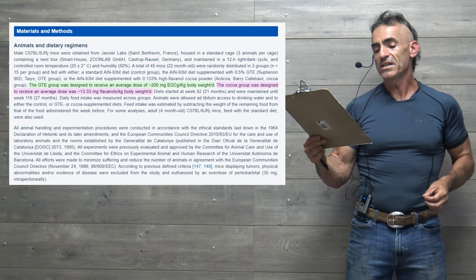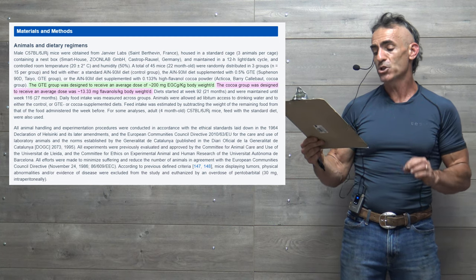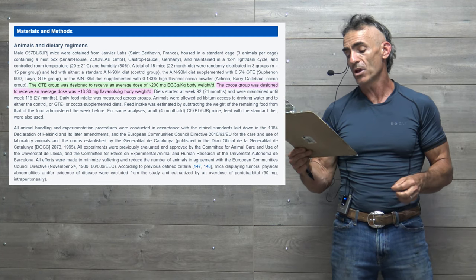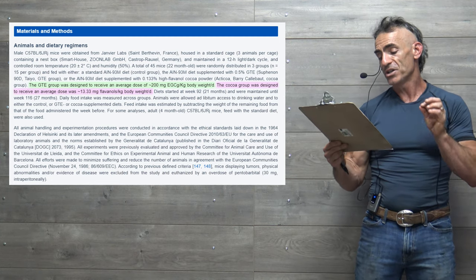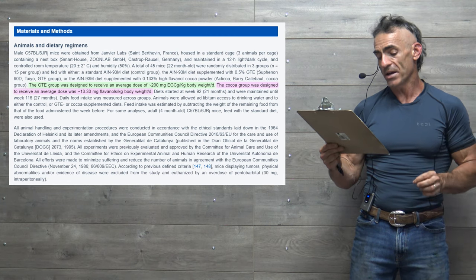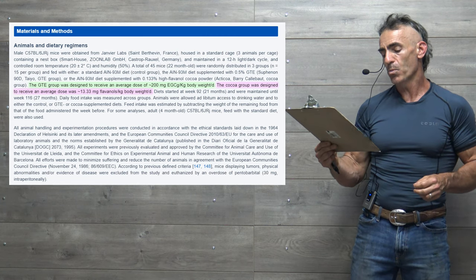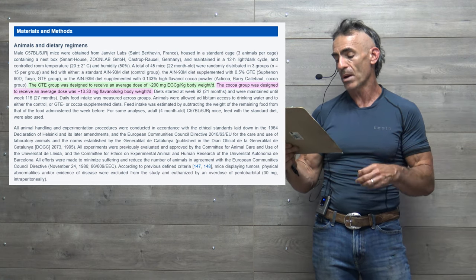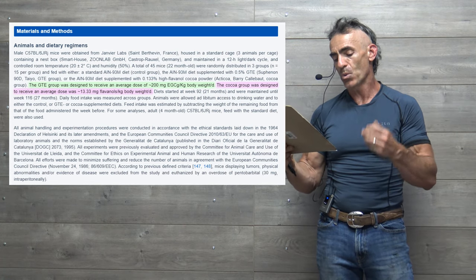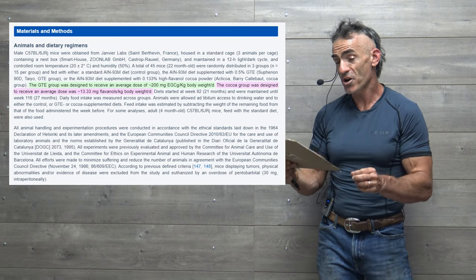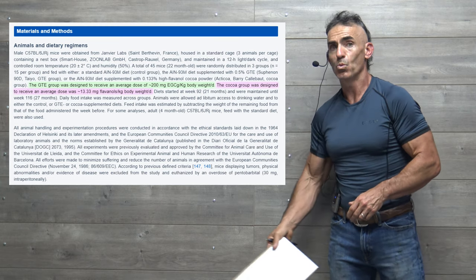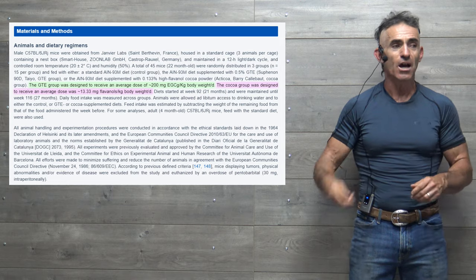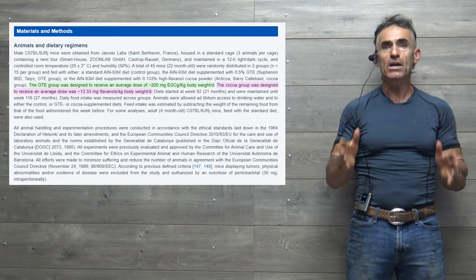The green tea extract group was designed to receive an average dose of approximately 200 milligrams of EGCG per kilogram of body weight a day. The cocoa group was designed to receive an average dose of approximately 13.33 milligrams of flavonoids per kilogram of body weight a day. The diets started at 92 weeks, which is just amazing.